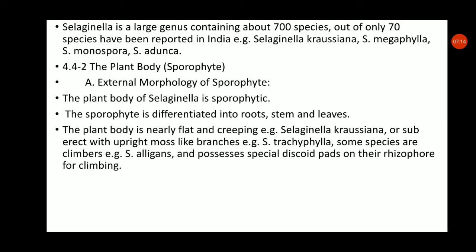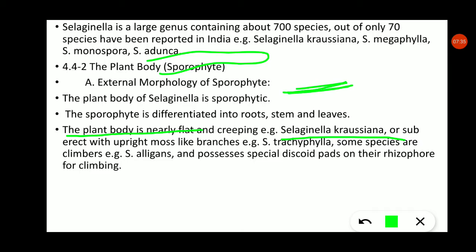The plant body is nearly flat and creeping, as in Selaginella kraussiana, or sub-erect with upright moss-like branches, as in Selaginella trichophylla. Some species are climbers, such as Selaginella elegans, which possesses special discoid pads on their rhizophores for climbing.